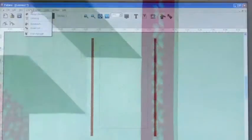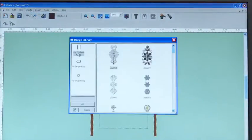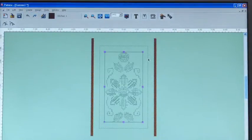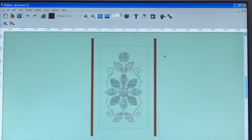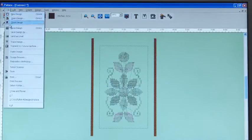The Singer Futura Quintet Sewing and Embroidery Machine comes with a selection of endless hoop designs built in. Just select the design you want to stitch.